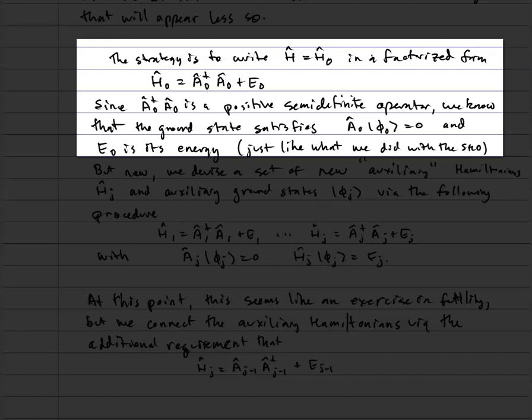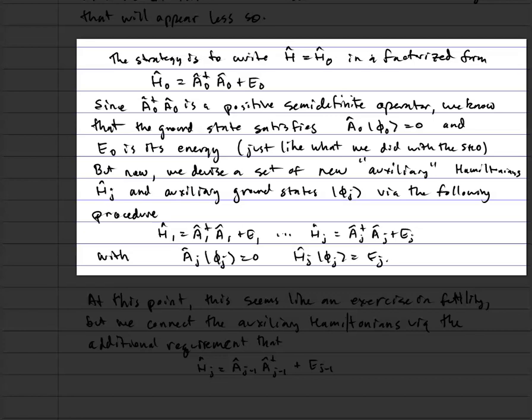If you look back at how we did this with the simple harmonic oscillator, that's exactly the condition we used. But now, with the standard Schrödinger factorization method, to get the next energy level beyond the ground state, we have to construct a new auxiliary Hamiltonian. The set of Hamiltonians we're going to call hⱼ, and there'll be a set of auxiliary ground states φⱼ.